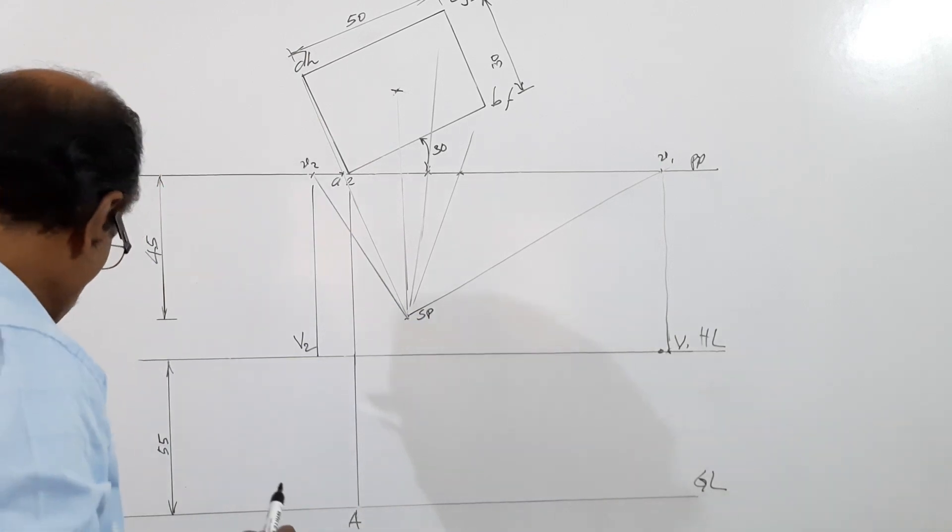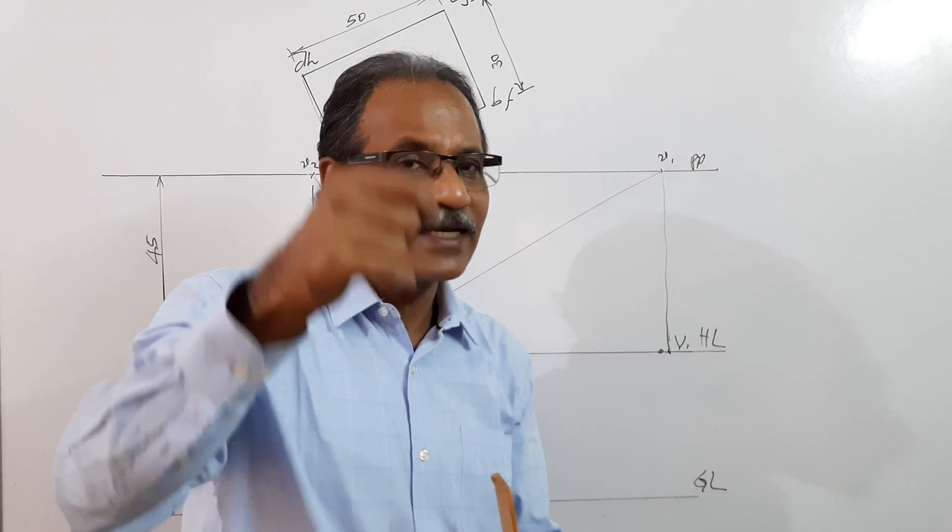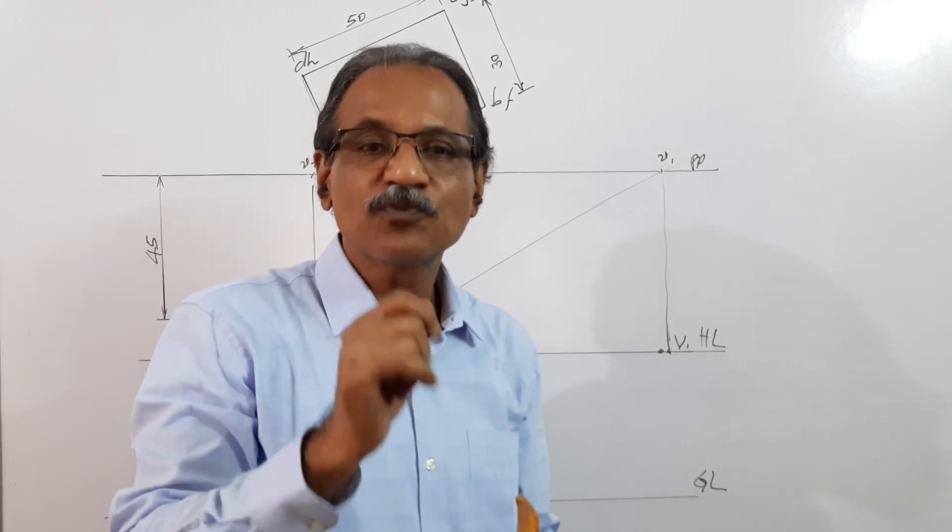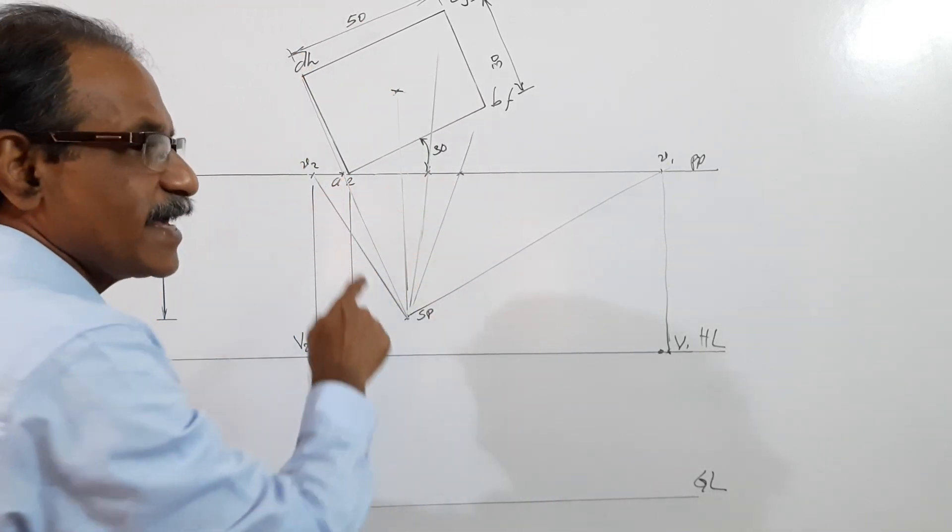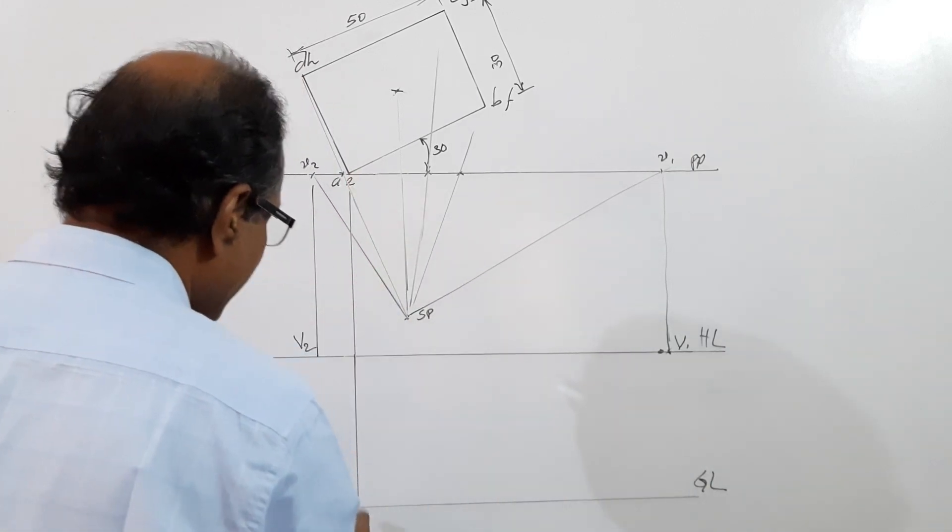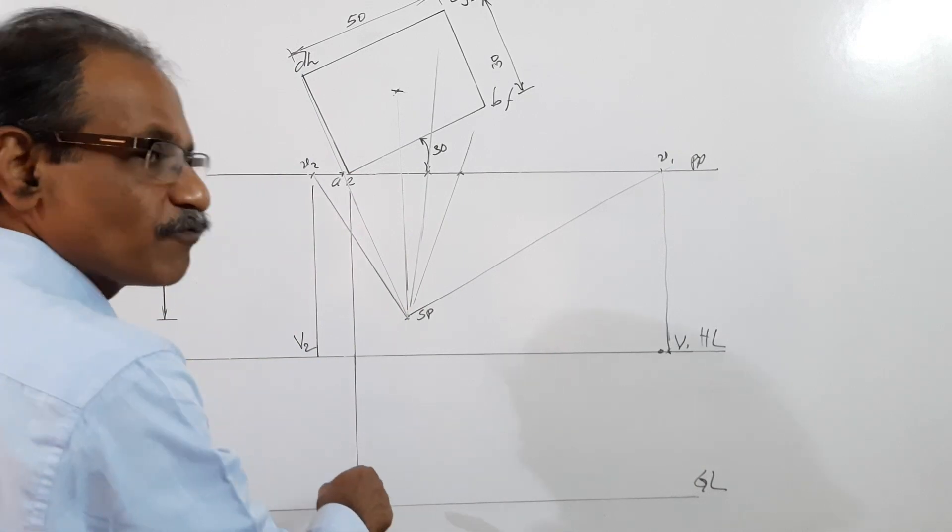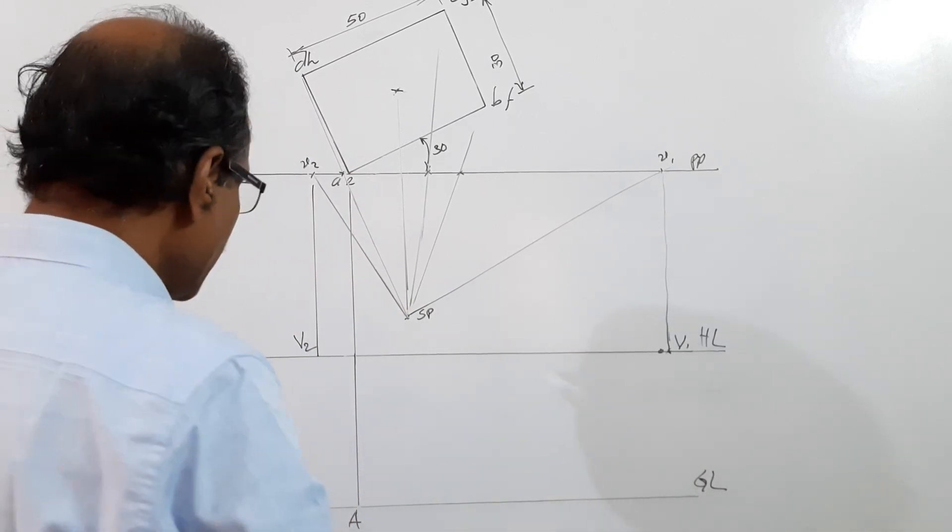You know that a point which lies on the picture plane as well as the ground will have its perspective on GL. So AE is a point which is lying on the ground as well as picture plane. So if you drop it down, I get capital A. Capital A is what? The perspective view of the point A, corner A.